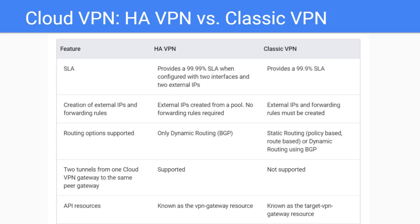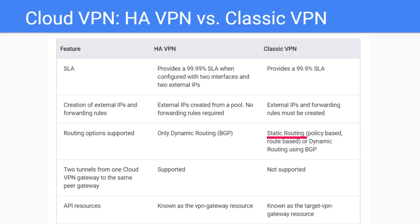Here is the comparison table between HA VPN and Classic VPN. Pay attention to SLA and routing options supported. Both offer 99.99% SLA. HA VPN supports only dynamic routing with BGP (Border Gateway Protocol), but Classic VPN can support either static and dynamic routing using BGP.